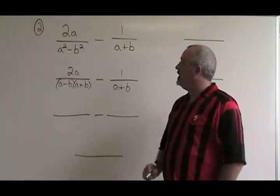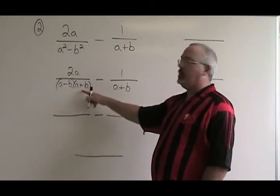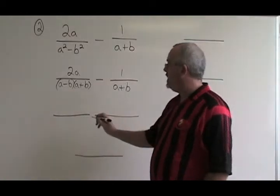Now, what is our common denominator going to be? Our common denominator will be a minus b, a plus b, which includes this and also includes the a plus b. So I'll write that in now.